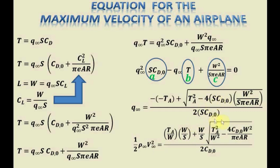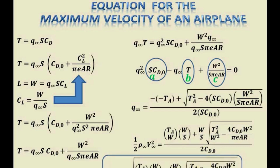For the second term, we do the same thing — shifting the surface area from the denominator to the numerator and multiplying and dividing by weight. The weight squared inside the square root comes out as weight, and the two weight terms cancel each other out. The result is divided by two times the zero-lift drag coefficient. Simplifying gives us the final equation for the maximum velocity that an airplane can fly.